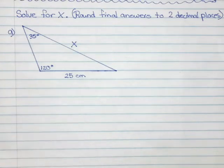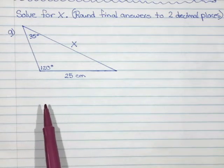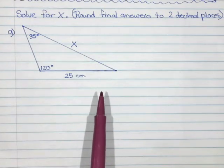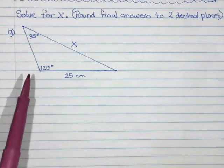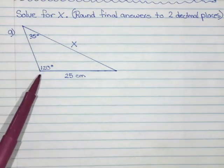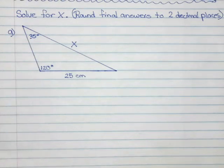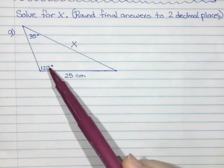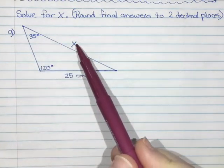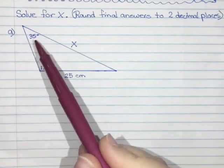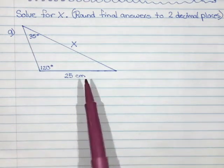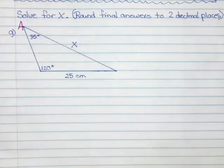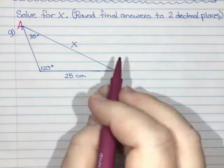This is where I would use sine law. I'm going to label my sides A, B, and C. I always start with A, and make A an angle that I know. I actually know two different angles, so I have a preference which one to call A. I'm going to look at the sides across from them. The side across from 120 is x, and the side across from 35 is 25. I'll let A be the angle where I know the side across from it. So this is angle A and this is side a.